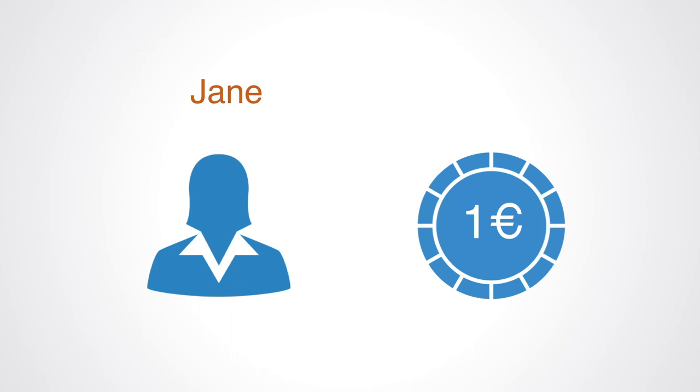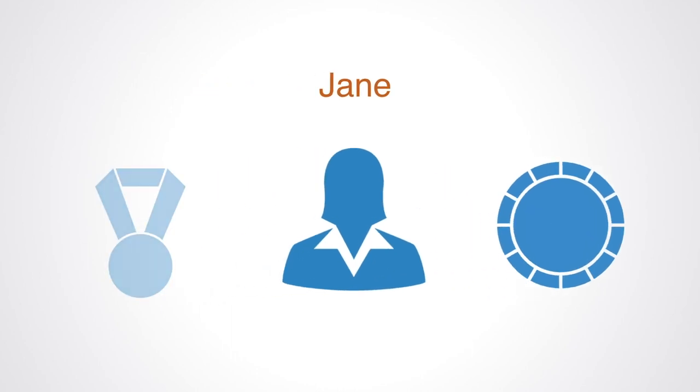Now, suppose you think Jane has a chance of winning that position. How much would you be willing to pay for a Jane share? If a Jane share pays $1 if Jane wins and she has a 70% chance of winning, then that share is worth $0.70. You would be willing to pay up to $0.70 for such a share.